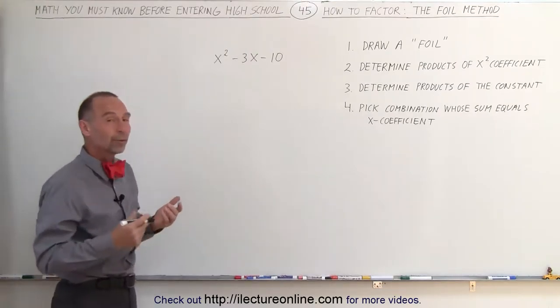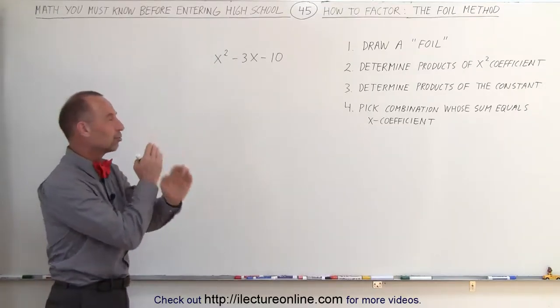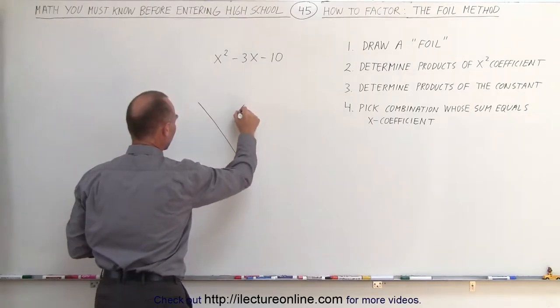So let's go through the process. First of all, we need to draw what we call a FOIL. We just simply draw a big X. It looks like there's two swords on top of one another like that.